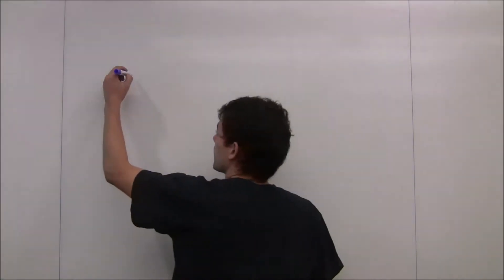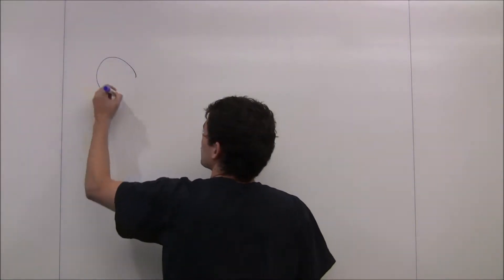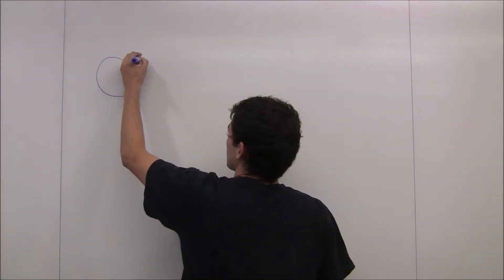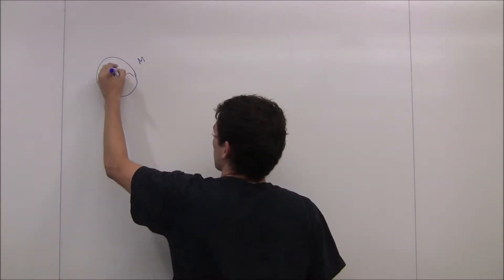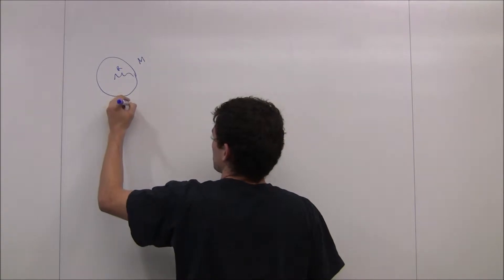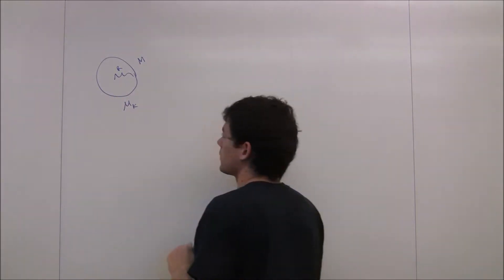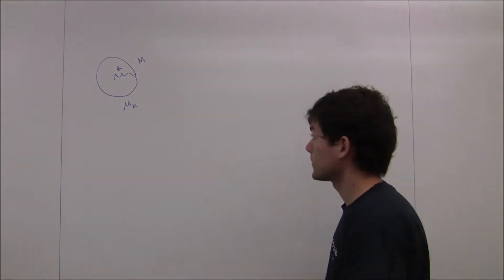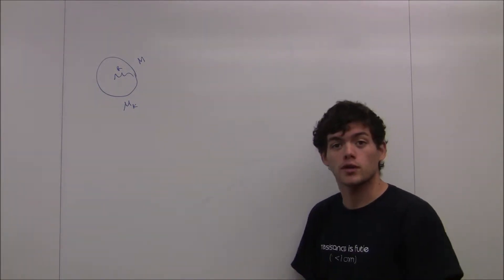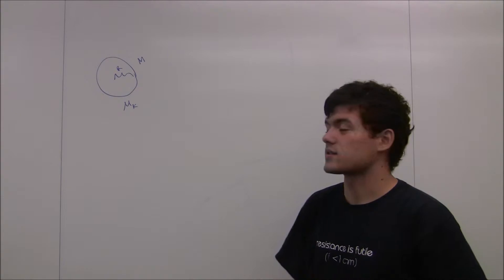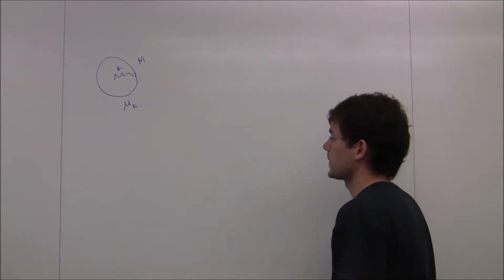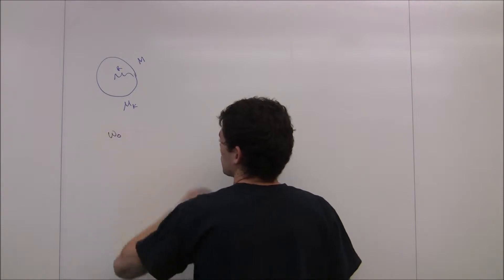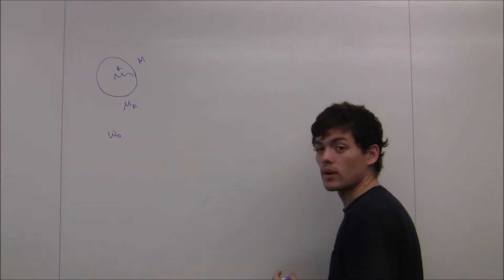In this problem, we're told that a hockey puck consists of a circle of mass m and radius r that has a coefficient of kinetic friction mu sub k with the ice below it, and that it has a uniform mass density. We're first asked what the torque due to friction on this spinning hockey puck is. It has an initial angular velocity omega naught.